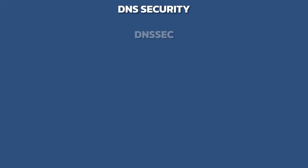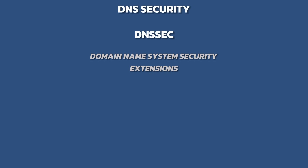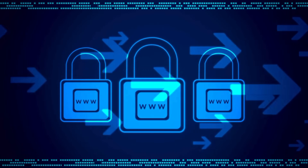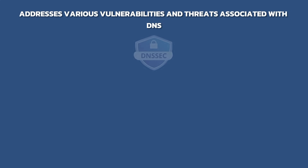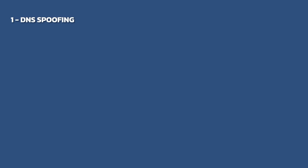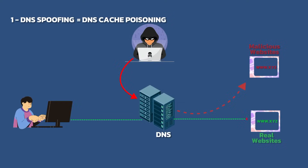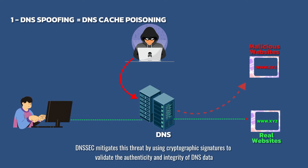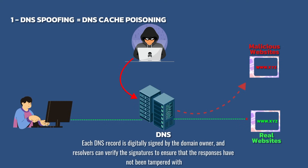DNS security, often referred to as DNSSEC (Domain Name System Security Extensions), is a set of protocols and technologies designed to enhance the security and integrity of the DNS. It addresses vulnerabilities such as DNS spoofing, cache poisoning, and man-in-the-middle attacks. DNS spoofing occurs when attackers manipulate DNS responses to redirect users to malicious websites or intercept their traffic. DNSSEC mitigates this by using cryptographic signatures to validate the authenticity and integrity of DNS data — each DNS record is digitally signed by the domain owner, and resolvers can verify the signatures to ensure responses have not been tampered with.